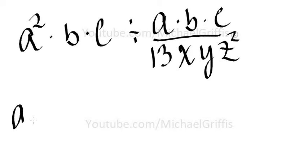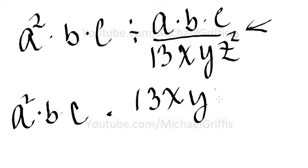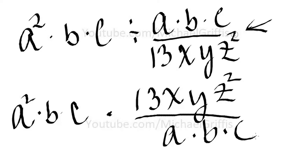What do we do? Let's rewrite a squared times b times c. Let's turn this to multiplication. We flip it, so this becomes 13xyz squared over a times b times c.